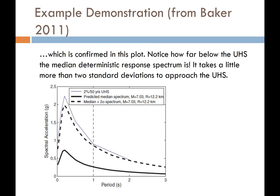Baker demonstrates: run a deterministic seismic hazard analysis with a magnitude of 7.3 and an average source-to-site distance of 12.2 kilometers. That deterministic result is not even close to the probabilistic spectrum — because the de-aggregation also said sigma equals 2.02. So Baker says: let's go ahead and jack up those ground motions by 2 sigma. Once we do that, we get a dashed line that at our period of interest of one second is very close to the response spectrum from the PSHA.